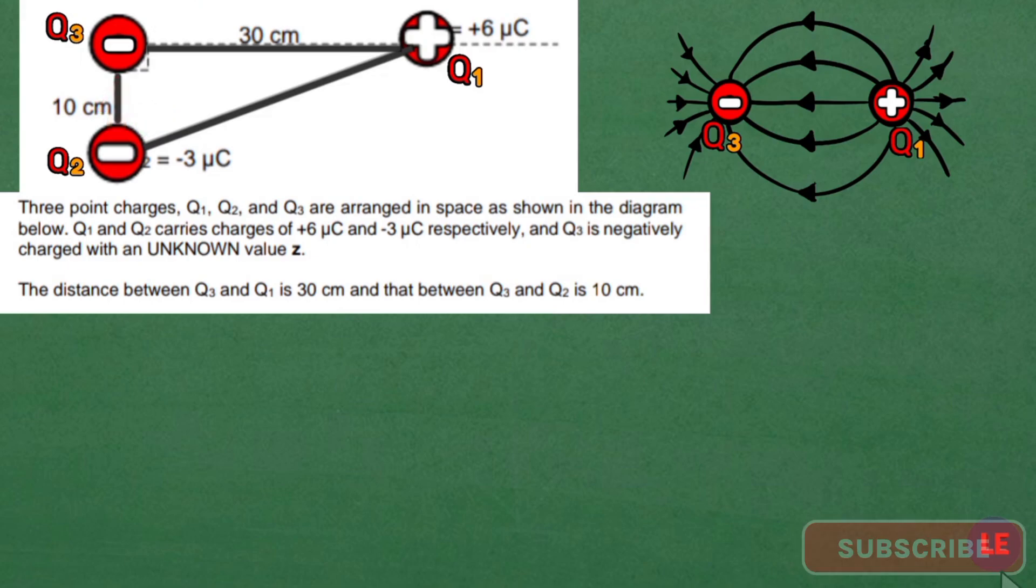I am sure by now we know that if we draw electric field patterns around two unlike point charges, the direction points towards the negative charge. The electric field lines must touch the charge and must not cross each other. That is how the electric field patterns around two unlike point charges are drawn.